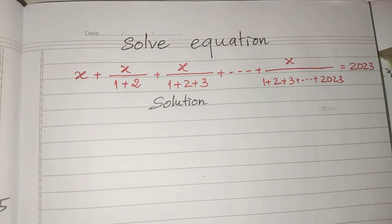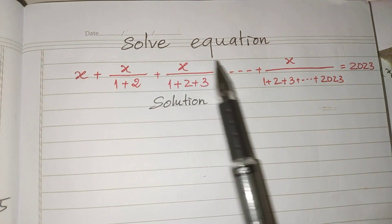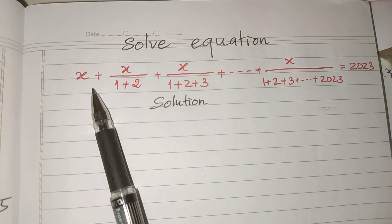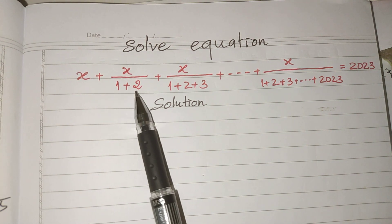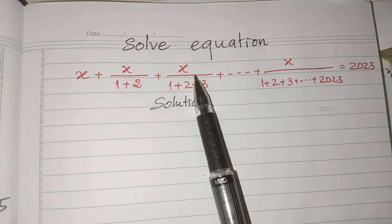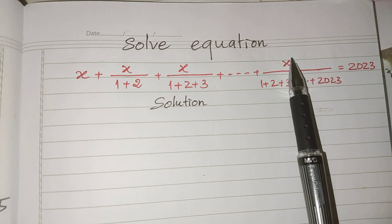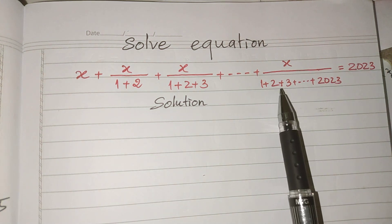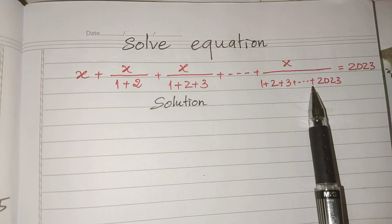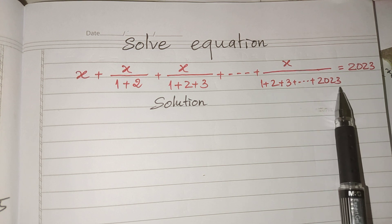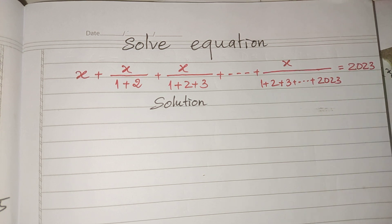Hello everyone, welcome to my YouTube channel. Today I have one exercise to solve: the equation h plus h divided by (1+2) plus h divided by (1+2+3) plus ... plus h divided by (1+2+3+...+2023) equals 2023. Before we go to the solution, please don't forget to subscribe to my channel for more exciting videos. Now we go to the solution together.